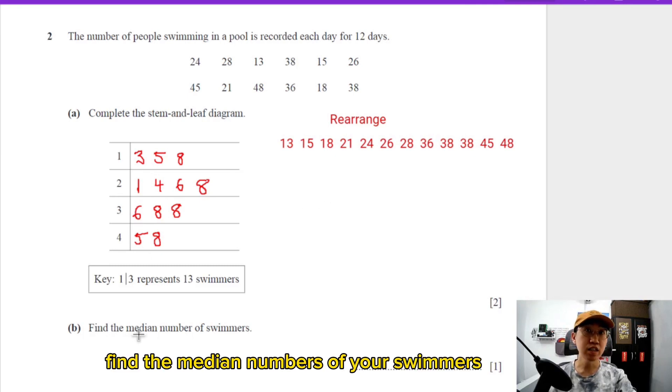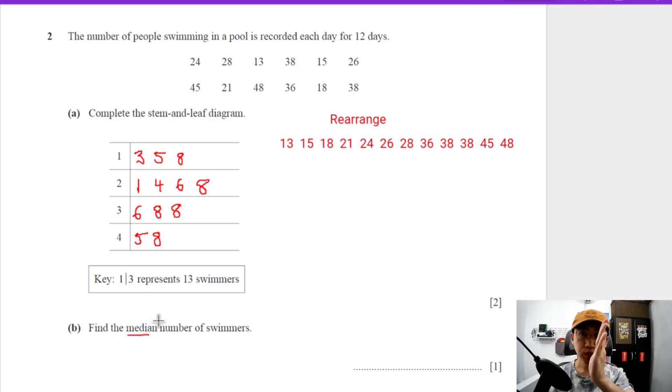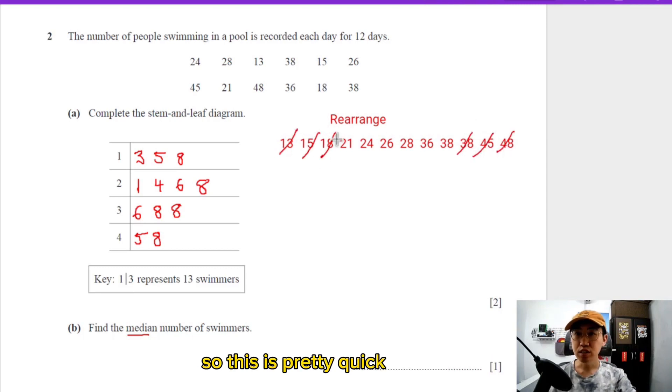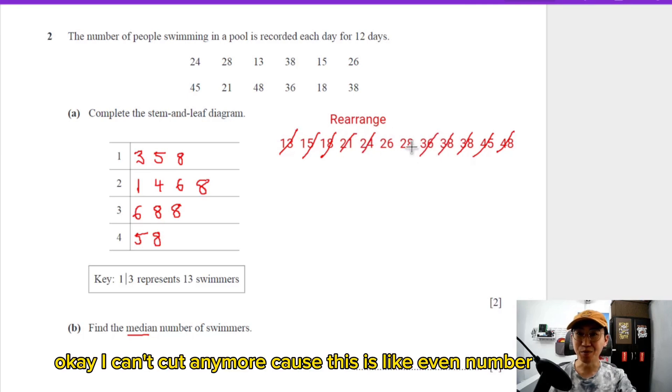Next, question B: find the median number of swimmers. Median means the middle value. When you have this little data, what you can do is cut left and right until you find the middle value. This is pretty quick. I can't cut anymore because this is an even number.